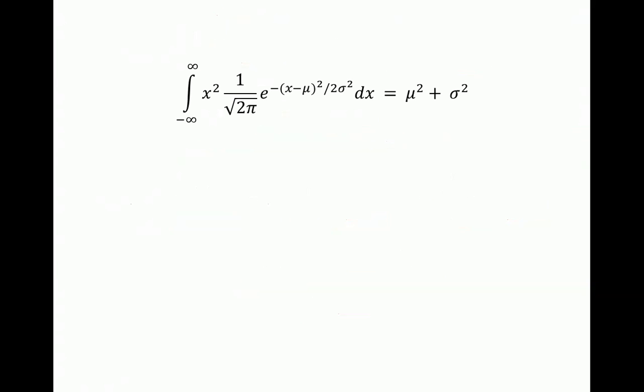We showed that the second moment for a normal random variable equals mean squared plus sigma squared.